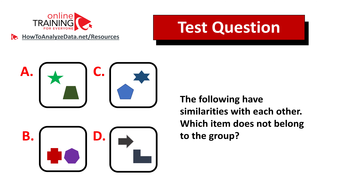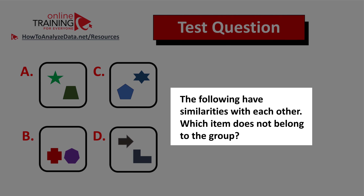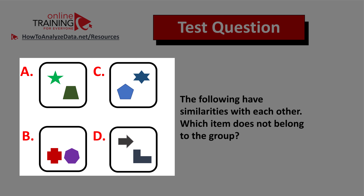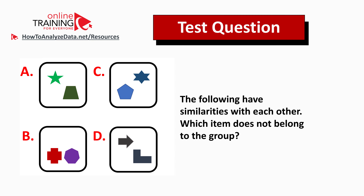Here is a question for you to try on your own: the following have similarities with each other — which item does not belong to the group? You're presented with four squares with rounded corners, choices A, B, C, and D, each containing different shapes inside. Give yourself 10 to 15 seconds. Feel free to post your answer in the comment section, and I will post a detailed answer in future videos — so make sure to subscribe.